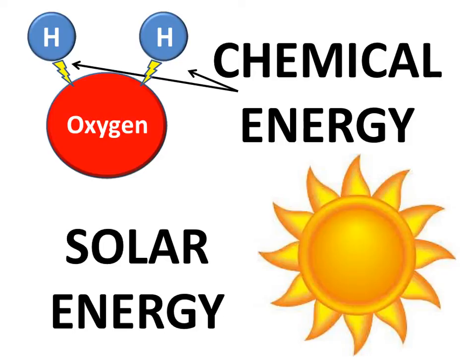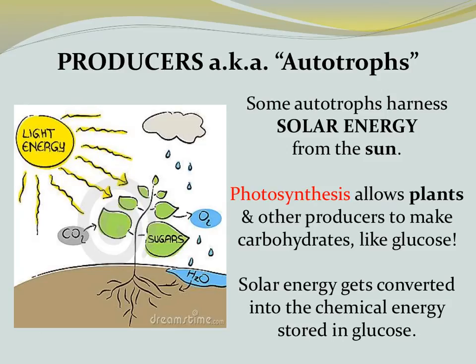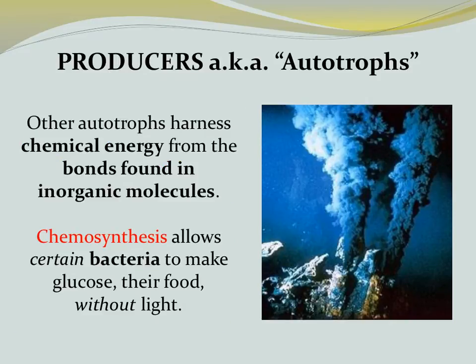Chemical energy is found in the bonds between the atoms of inorganic molecules. Solar energy comes from the sun. Organisms that make food within their cells are known as producers or autotrophs. Some autotrophs harness solar energy from the sun — photosynthesis is the process that allows plants and other producers to make carbohydrates like glucose, converting solar energy into chemical energy stored in glucose. Other autotrophs harness chemical energy through chemosynthesis, which allows certain bacteria to make glucose without light.